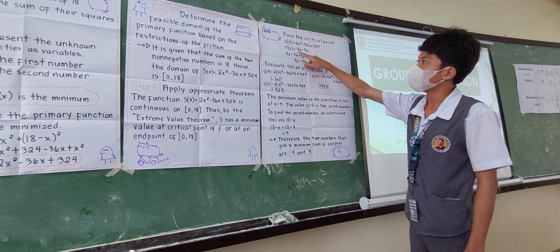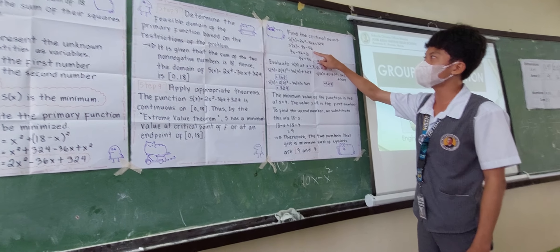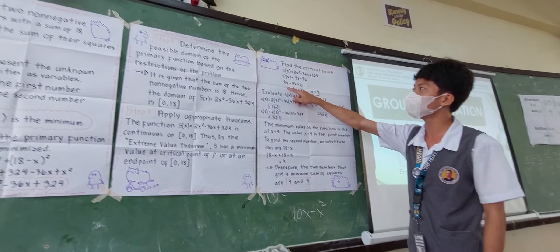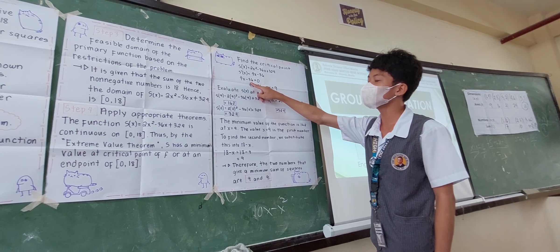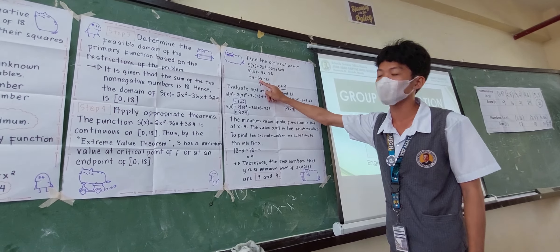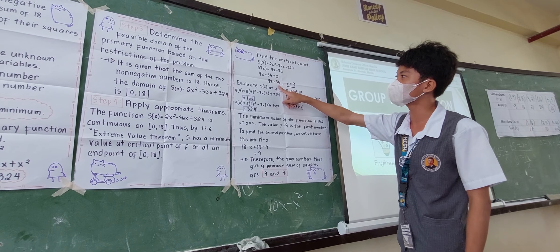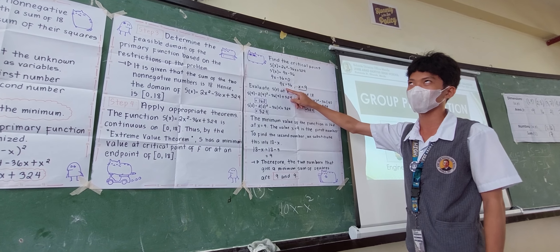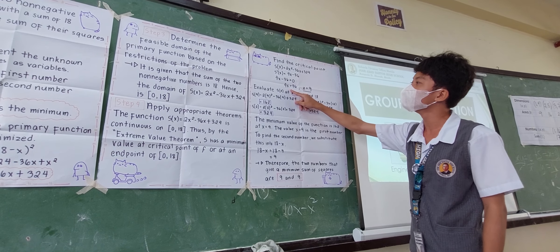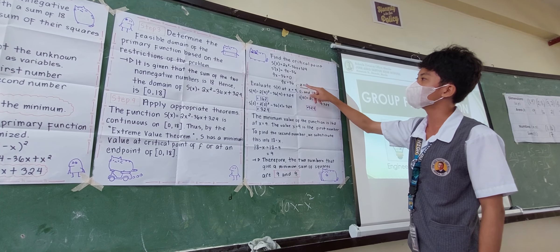Therefore, equate 4X minus 36 to 0. 4X minus 36 is equal to 0. Transpose the negative 36 to the right side to get positive 36. Then, 4X is equal to 36, and divide both sides by 4 to get X is equal to 9.